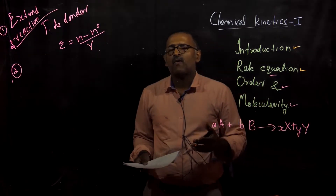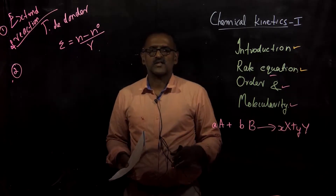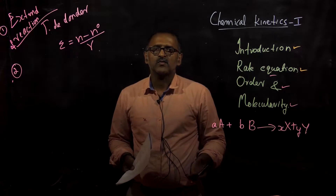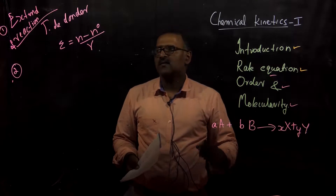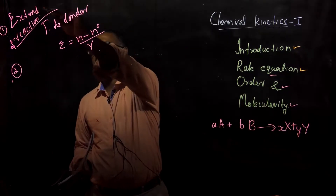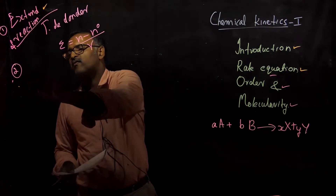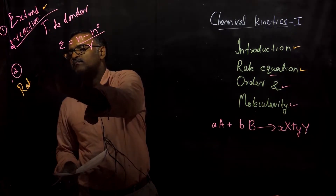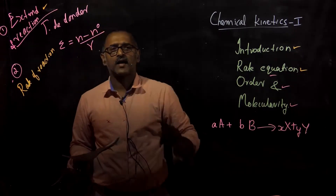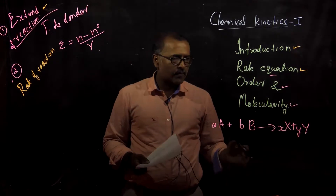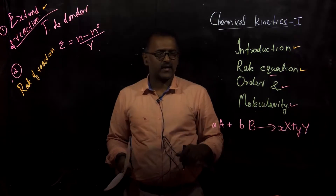In chemical kinetics, what are we actually dealing with? We are dealing with the rate of change of concentration with time. In that aspect, we have two important points to consider. One is the extent of reaction — the concept was given by De Donder — and the second one is the rate of reaction. Mostly, we will be dealing with the rate of reaction, but for a proper understanding of chemical kinetics, we should know what we mean by the extent of reaction.